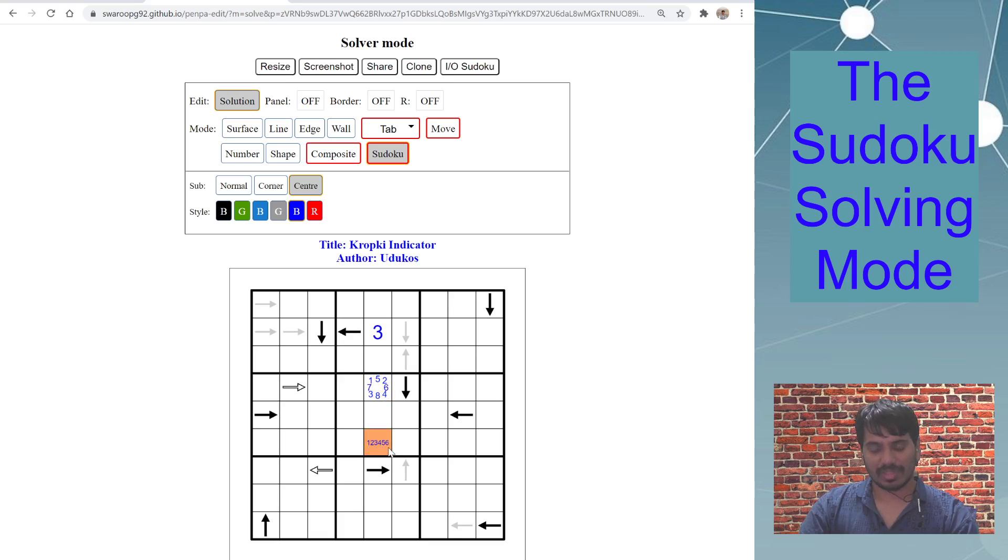Some other functions: in center mode, if you have already entered digits, let's say one, two, three, four, five, six, and you press four again, it just removes it from the cell. Similarly for corner mode, if I press two, it removes two and readjusts the remaining digits.